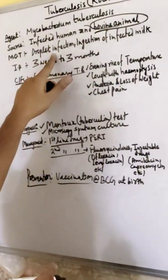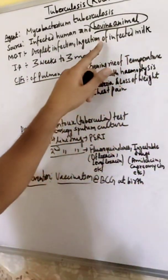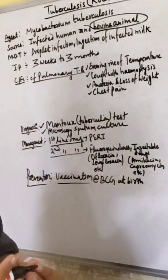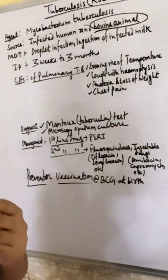Mode of transmission is droplet infection, ingestion of infected milk. If you consume infected milk, the man will suffer from TB.